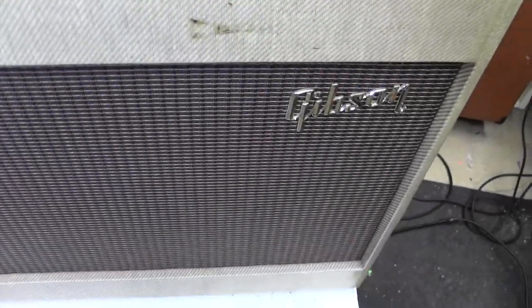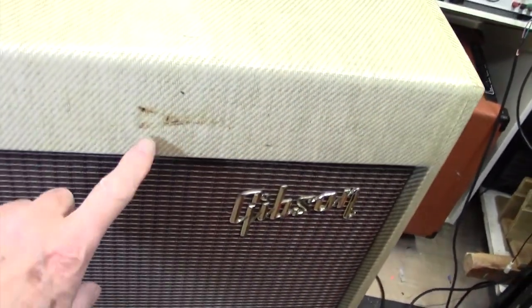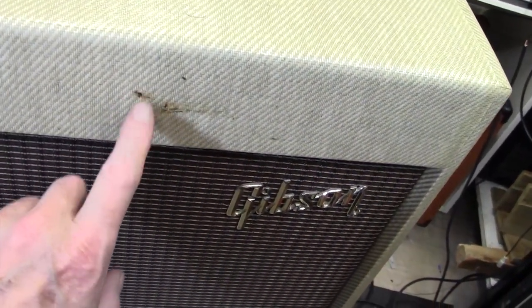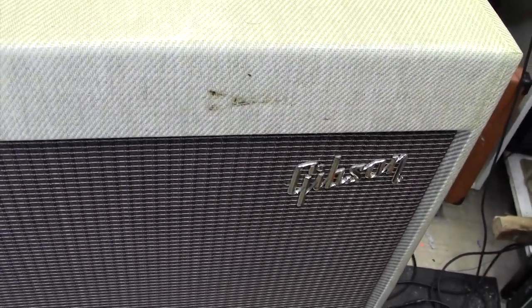Coming down to the front, not a lot to see here, just the grill cloth with the Gibson logo. Unfortunately a little bit of something here, not quite sure what that is. I'm not going to attempt any cosmetics on this because it's quite rare and valuable. I'll leave that to the customer.